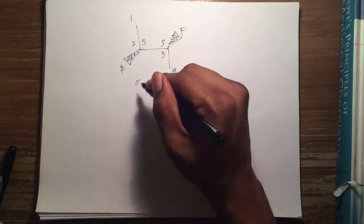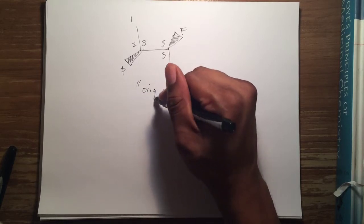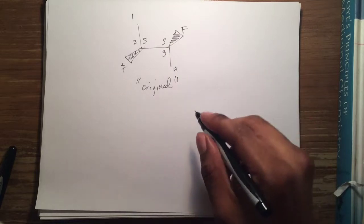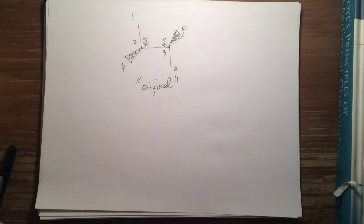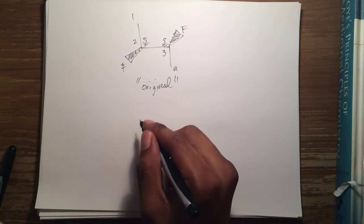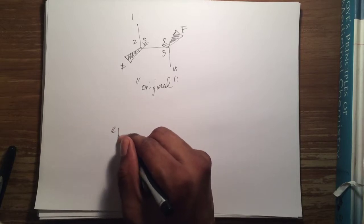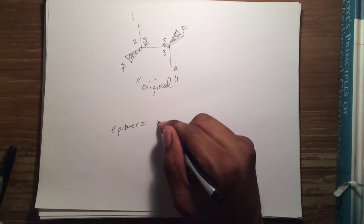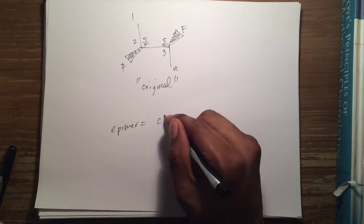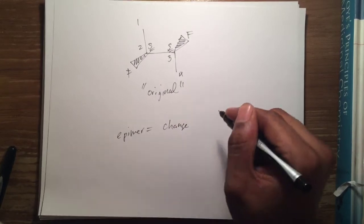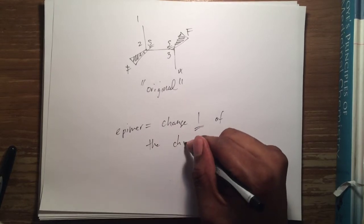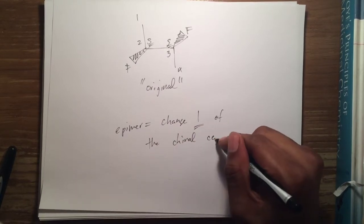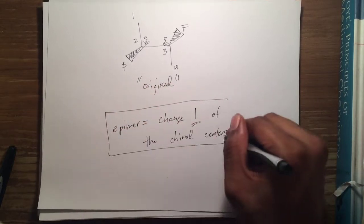Let's say for instance that this was the original. The reason this is the original is because this is what they originally gave us — the molecule that they originally gave us. Now if you have any original stereoisomer, what you can do is take the stereoisomer, and if you wanted the epimer of it, what you do is you have to change one of the chiral centers in the molecule. That's the definition of what an epimer is.